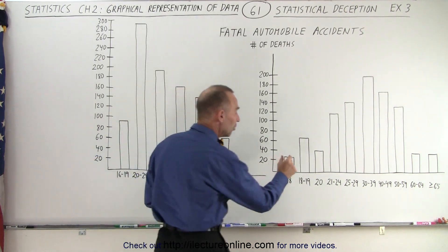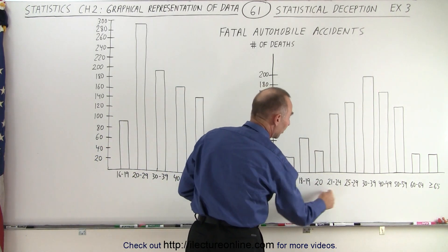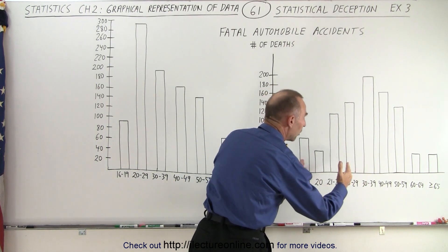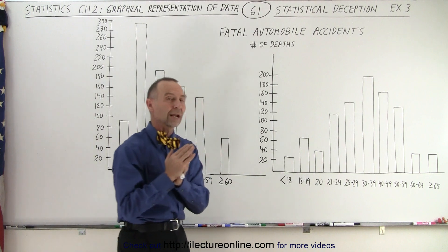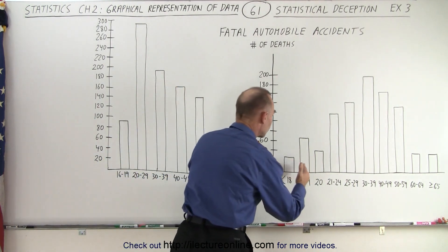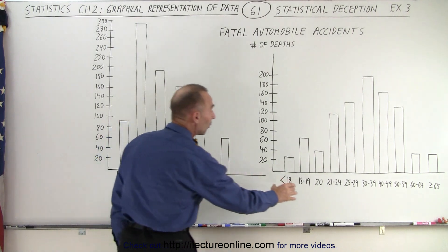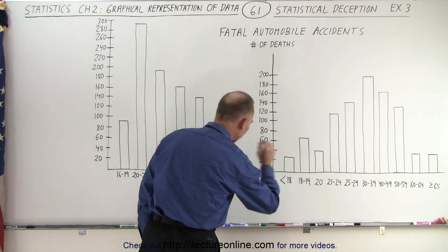But then, notice there's a number of categories, three of them, that represent drivers from 20 to 29. What if we lump all the drivers from 20 to 29 together and all the teenage drivers that are 18 and below or 18 or 19 years old? Let's go ahead and categorize those together.